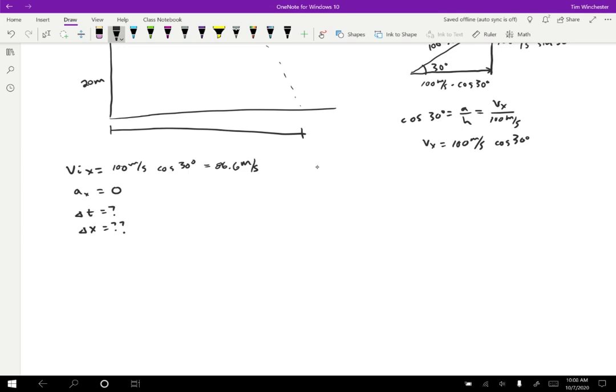All right. So let's consider the Y direction. Well, the VY is going to be 100 meters per second times sine of 30, which is just 50 meters per second. The acceleration in the Y direction is going to be negative 10 meters per second squared. The final velocity, we don't know. Delta T we don't know. And the delta Y, we do know that's going to be negative 20 meters because again, the ball is landing lower than where it started.